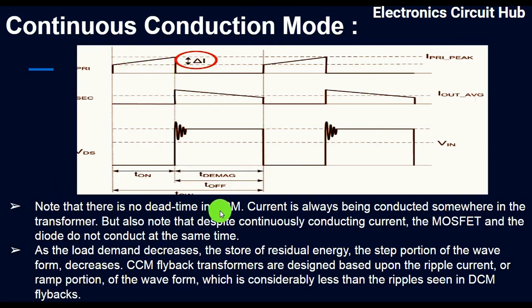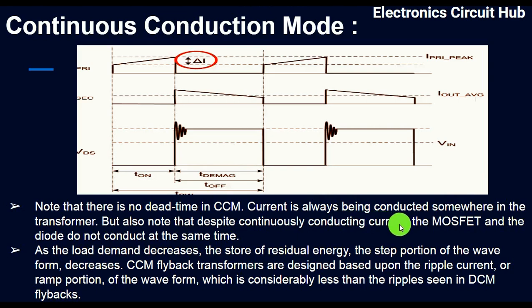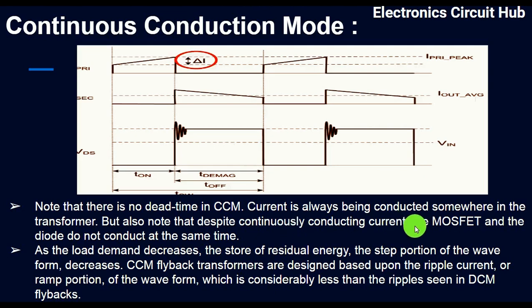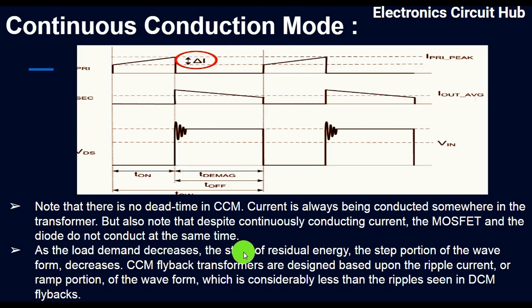Note that there is no dead time in CCM. In the BCM mode we have a dead time or quasi-resonant time, but that is not present in CCM. Current is always being conducted somewhere in the transformer. Also note that despite the transformer continuously conducting current, the MOSFET and diode do not conduct at the same time. As the load demand decreases, the residual energy — the step portion of the waveform — decreases.